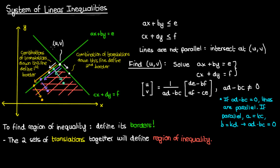Let me repeat this because this is key. If we start at the point of intersection u comma v and move down along the first line, we're still at the first border. But then if we move again down the direction of the second line, we'll be inside the region of inequality. If we repeat these two translations over and over again, moving different distances each time, we'll eventually be able to map out the entire region of the inequality.